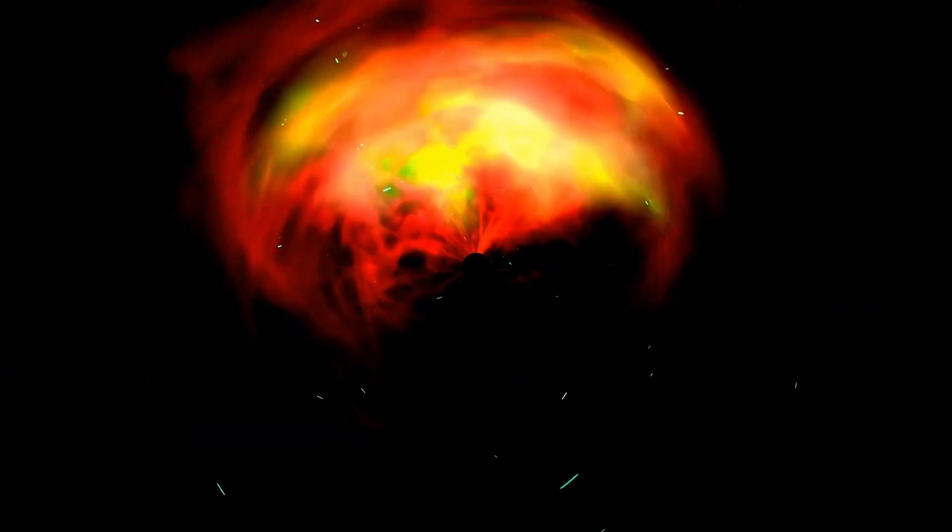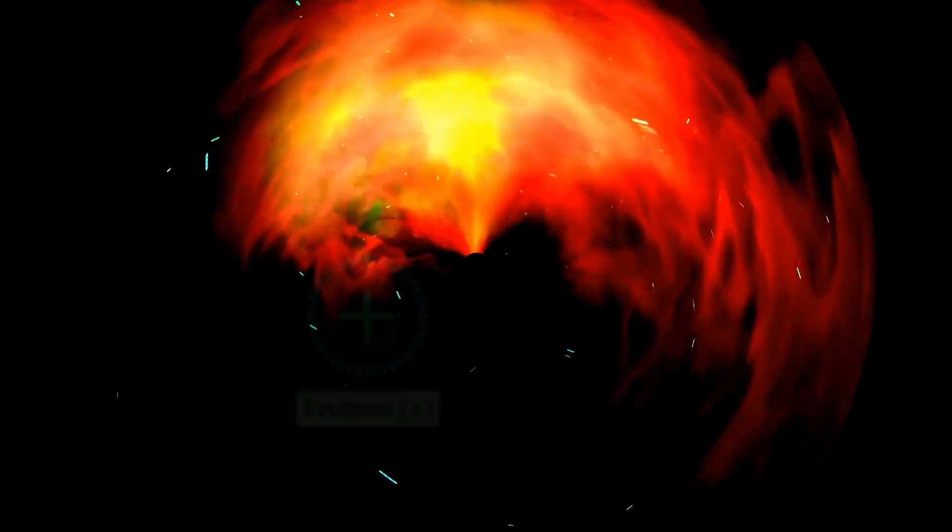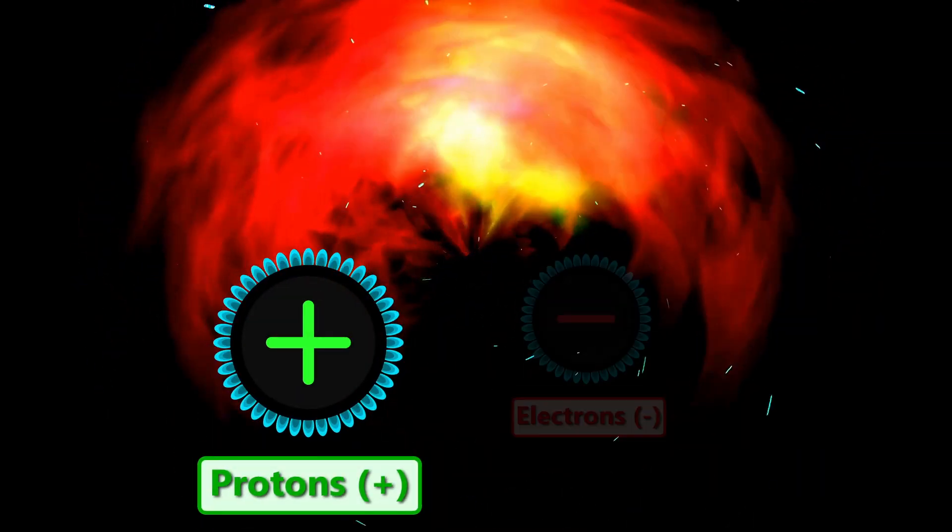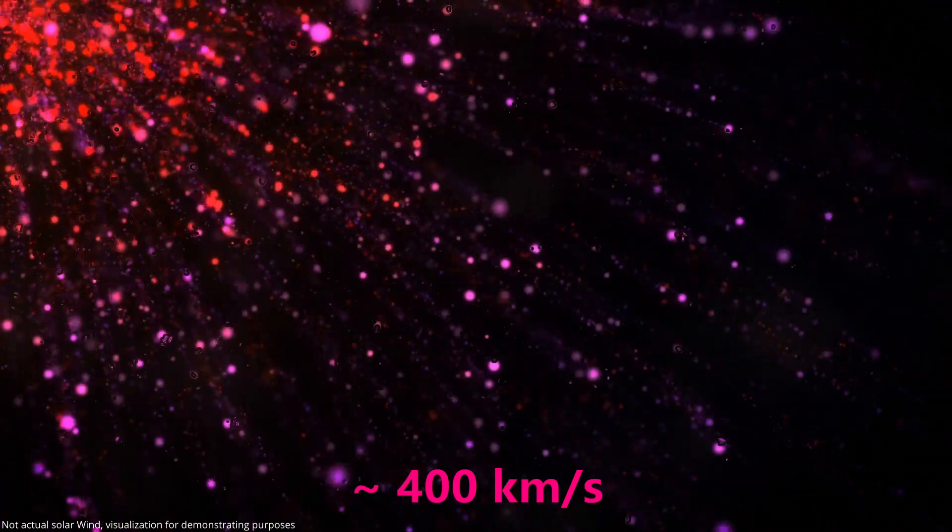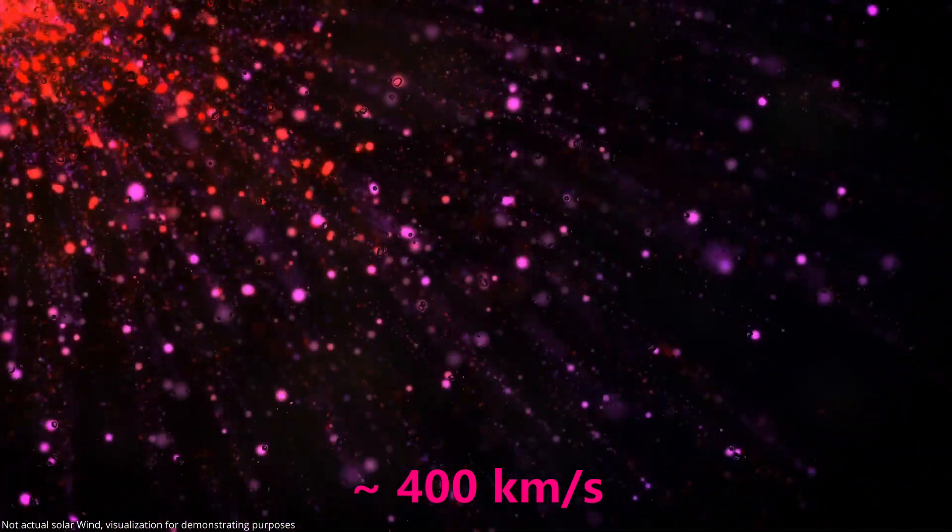The solar wind consists of charged particles, protons with positive energy and electrons with negative energy. They are discharged from the Sun at a high speed of about 400 kilometers per second, which is necessary to create the Northern Lights.